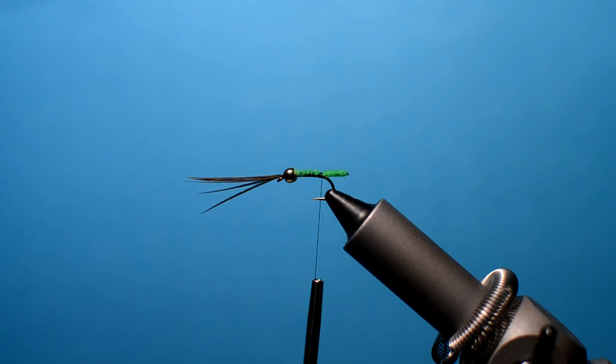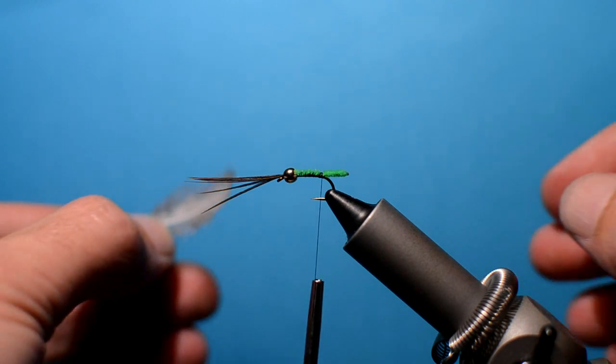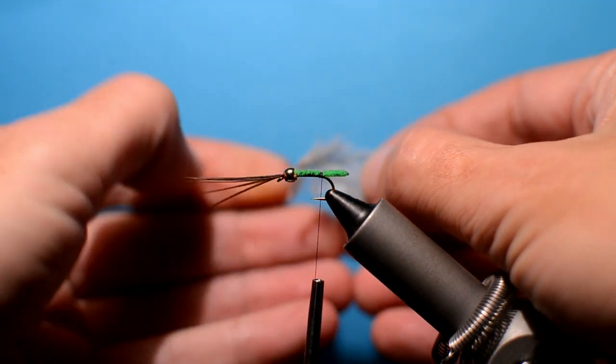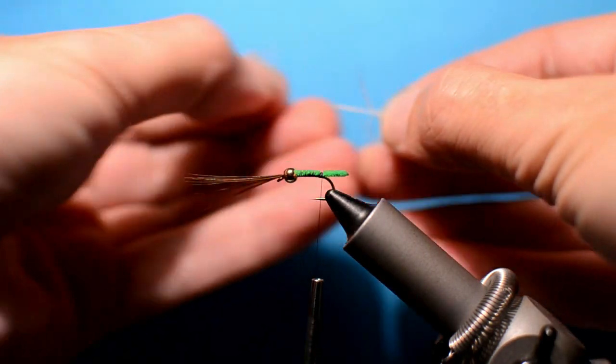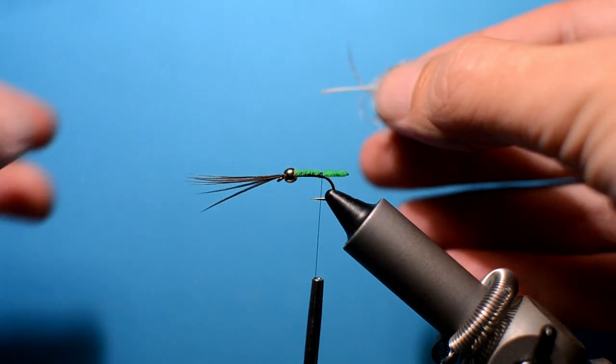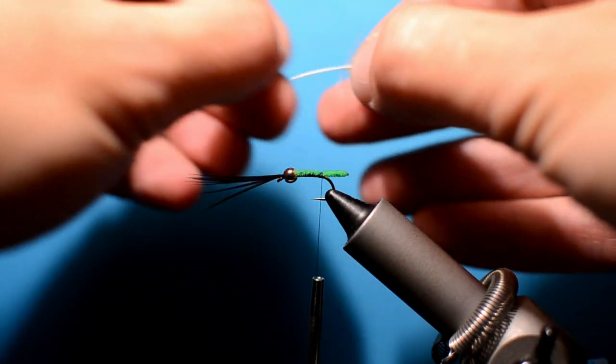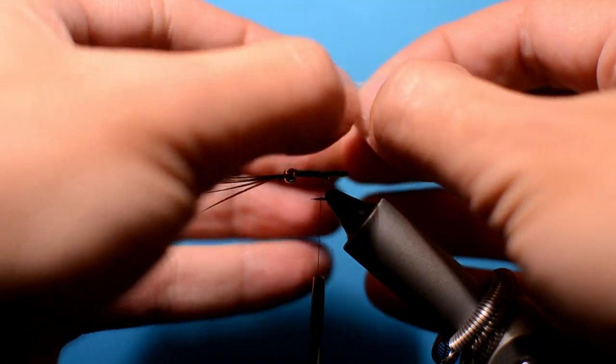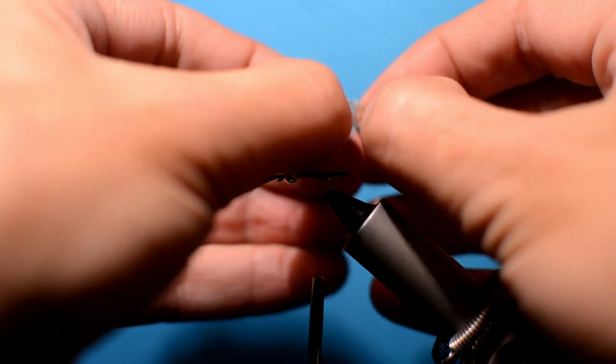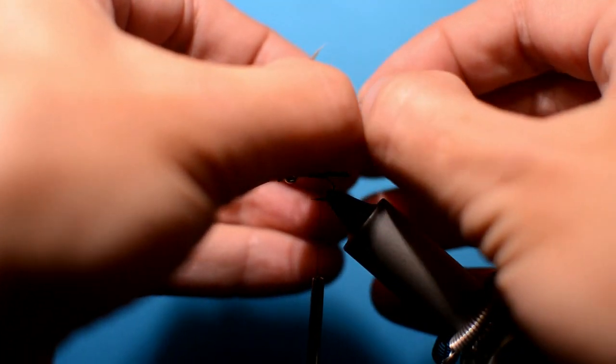Next, a little partridge hackle. Remove all the rough fibers from the bottom. Then taking the very tip, just separate the fibers.